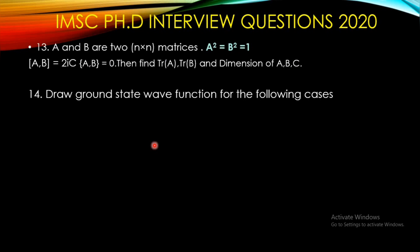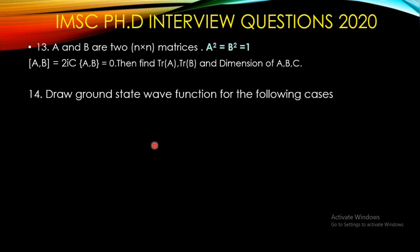They also asked to draw the ground state wave function for the following cases: a particle in a box from 0 to L, then for a finite negative potential, and a step-like potential where the left side is infinite. You need to know how to plot the wave function when a potential is given in different kinds of regions.